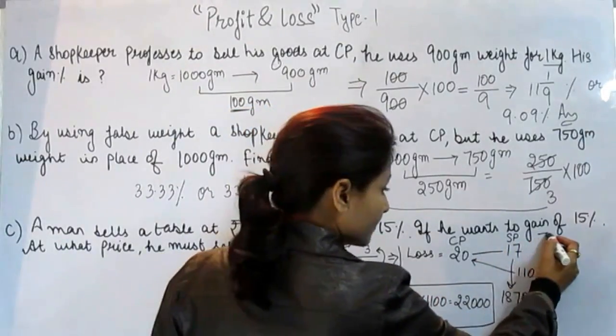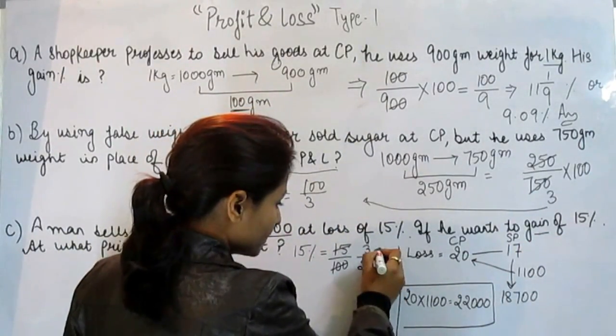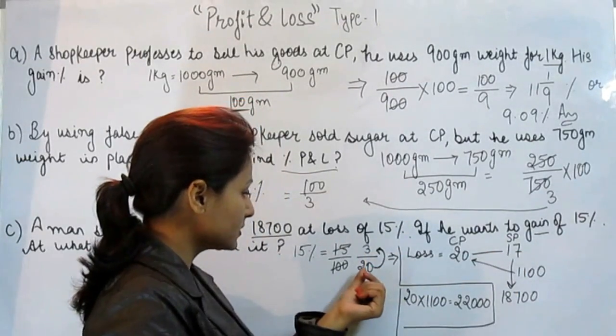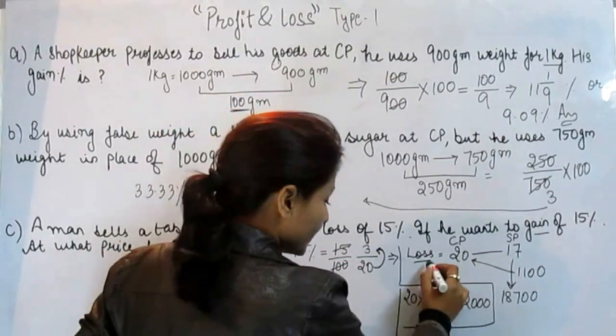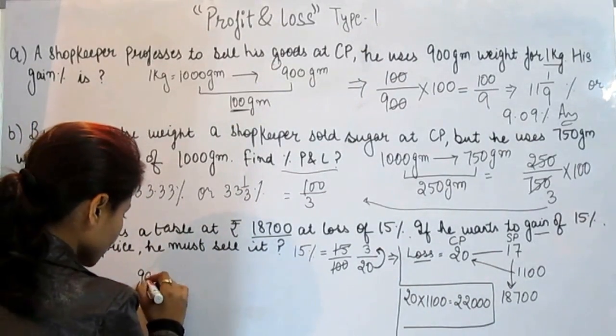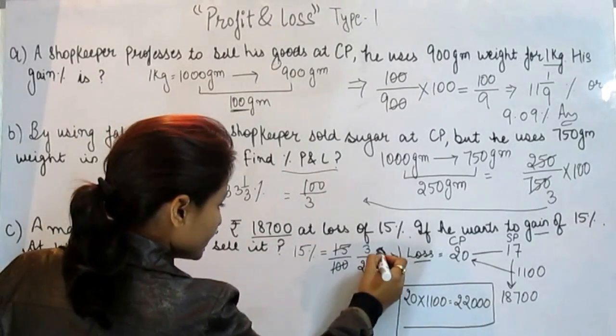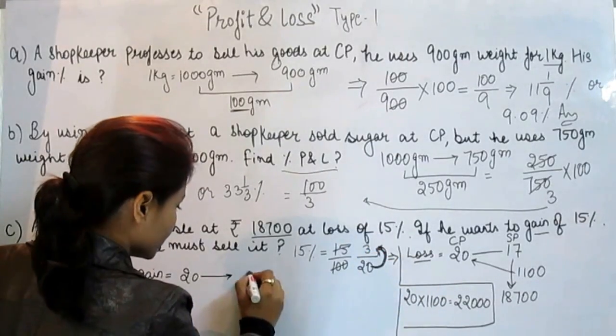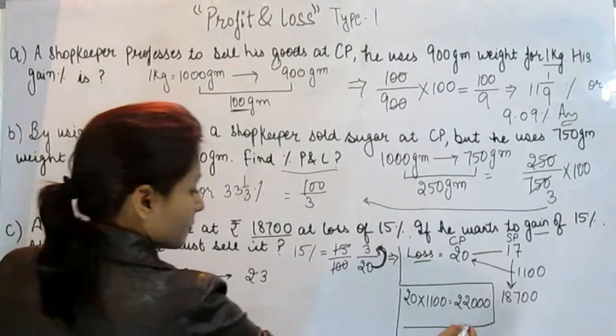now he wants to gain with the same 15%. The gain of 15% would be—we got this 17 from minus 3 from 20. But now he is looking for gain with the same 15%. Now what is the gain? Add this 3 to 20. That will be 23.